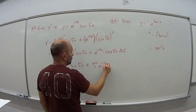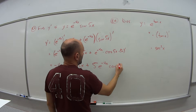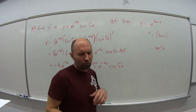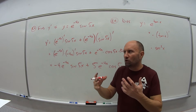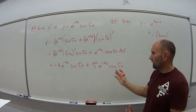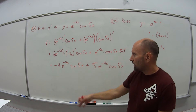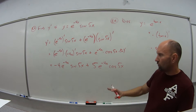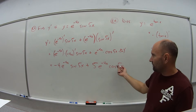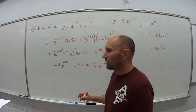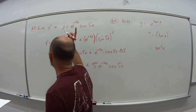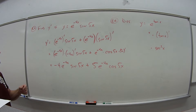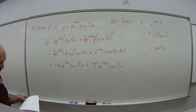So this gives us negative 4 e to the minus 4x times sine of 5x, plus — the derivative of 5x is 5 — so plus 5 e to the minus 4x times cosine of 5x. A lot of instructors aren't requiring you to simplify further, like factoring out e to the minus 4x, so you can leave it like that as the final answer.